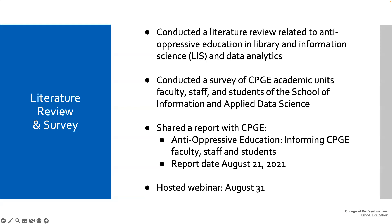Seventy-six percent of respondents were from the School of Information and 23 percent from Applied Data Science — not surprising since Applied Data Science is a smaller department. We also asked demographic questions; 15 percent did not identify with a marginalized community, while everyone else identified with one or multiple marginalized groups. Here are some snapshots related to two main categories: equity issues and anti-oppressive topics — including experiences, feelings, and attitudes toward anti-oppressive issues.